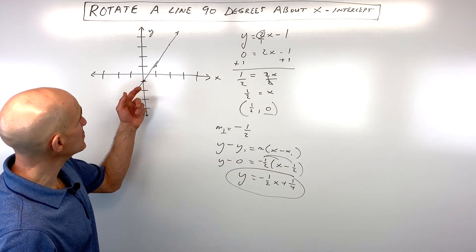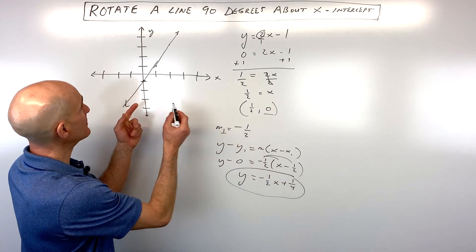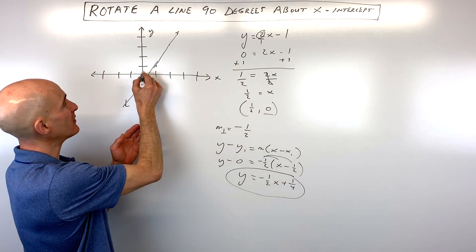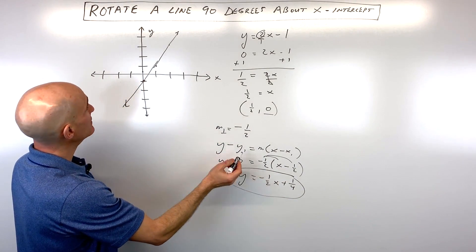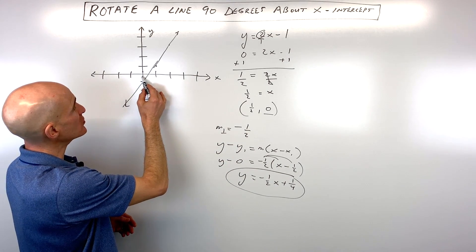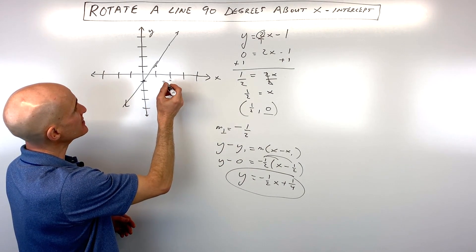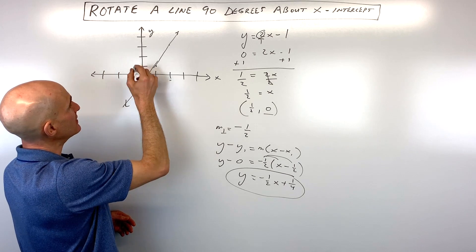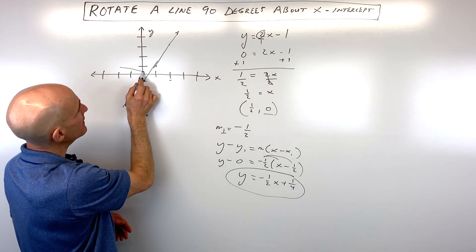If we want to graph that just to see what that looks like, you can see that the y-intercept is 1 fourth, which is about right there. And it has a slope of down 1 over 2. So down 1 over 2, something like this. And we know it's going to cross right there at the x-axis, the x-intercept. And that's going to be our perpendicular line.